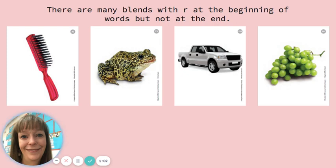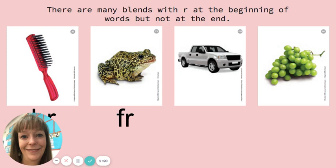Let's do the beginning of words, but not at the end. Brush has a B, R — BR. Frog has a F, R — FR. Truck has a T, R — TR. Grape has a G, R — GR.